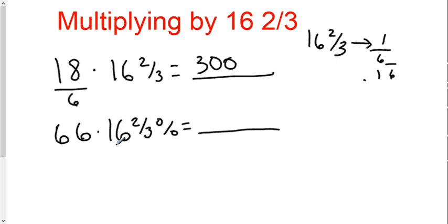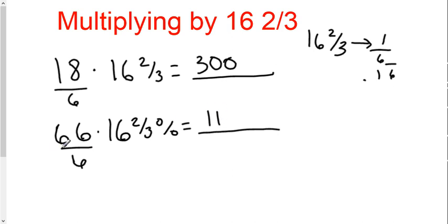Try it again, but in this case we're going to multiply by 16 and two-thirds percent. So just like before, divide by 6 and you get 11. But since 16 and two-thirds percent is exactly equal to 1/6, you do not add two zeros. So you get 11 as your answer.